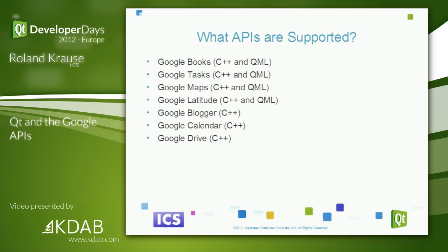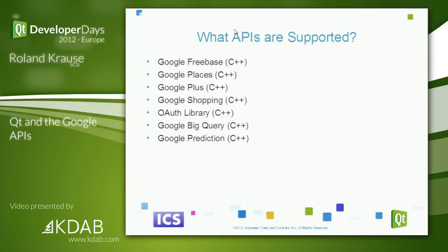Here's a quick overview of the supported APIs: Google Books, Tasks, Maps, Latitude, Blogger, Calendar, and Drive. Latitude is a location tracker. Google Freebase is an information database similar to Wikipedia. There's also Places Plus, Shopping, and Google Plus. The most foundational component is the OAuth library — Google provides OAuth authentication services, and that's the first thing you want to download before using the others, since most programs take advantage of it.